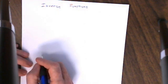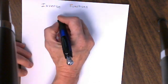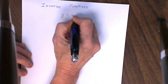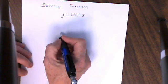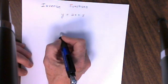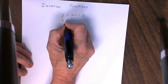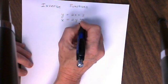Let's do a quick review of inverse functions from pre-calculus. In pre-calculus class, if I take an equation y equals 2x plus 3, I can get the inverse of this equation by following a certain procedure. That procedure is to replace my y's with x's and my x's with y's. If I do that, I get x is equal to 2y plus 3.